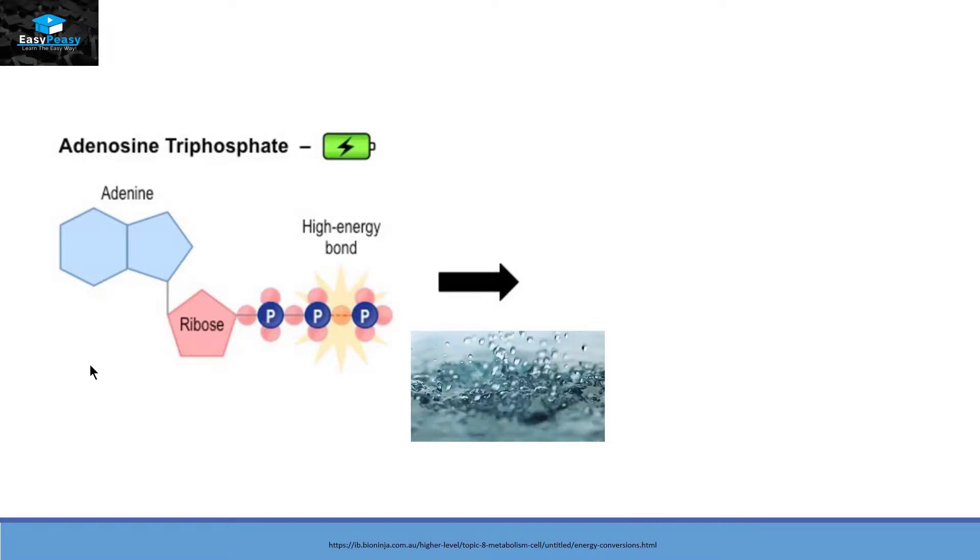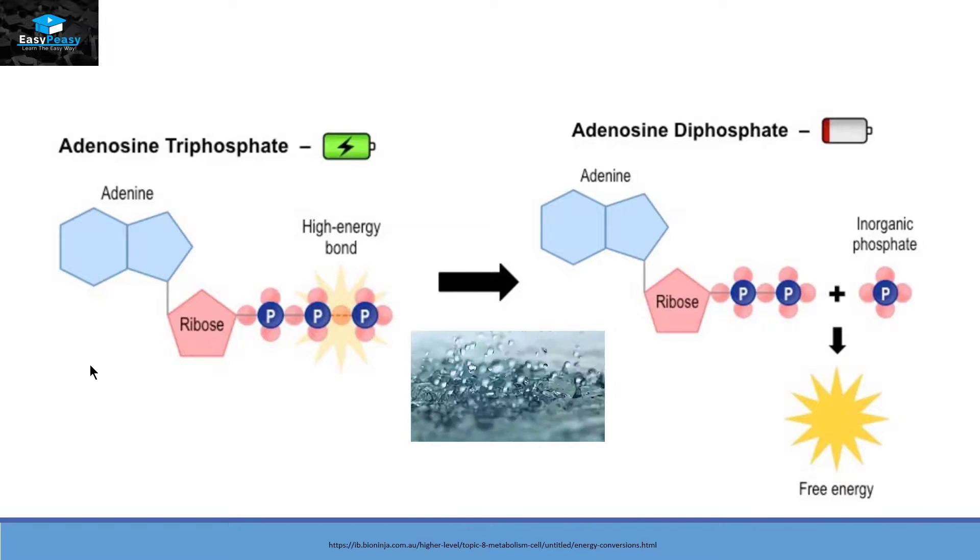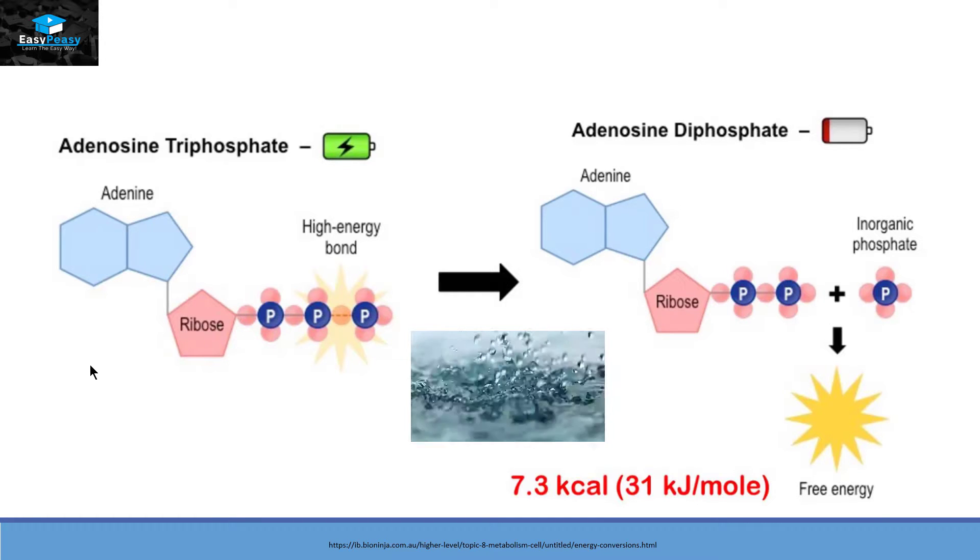This can be done by hydrolysis and then this ATP is going to convert itself into ADP that stands for Adenosine Diphosphate by releasing free energy. This energy is approximately 7.3 kilocalories or 31 kilojoules per mole.